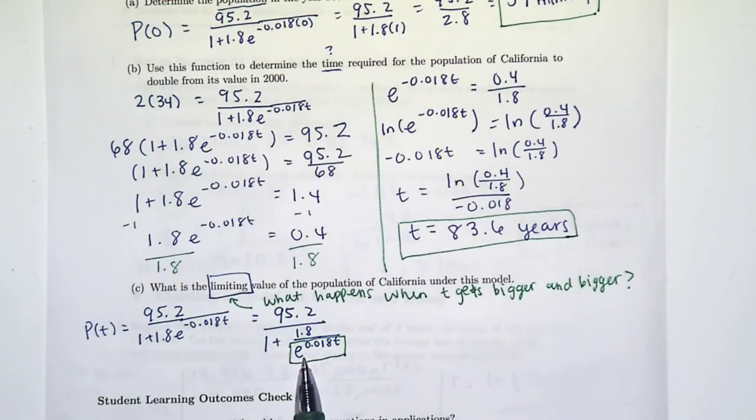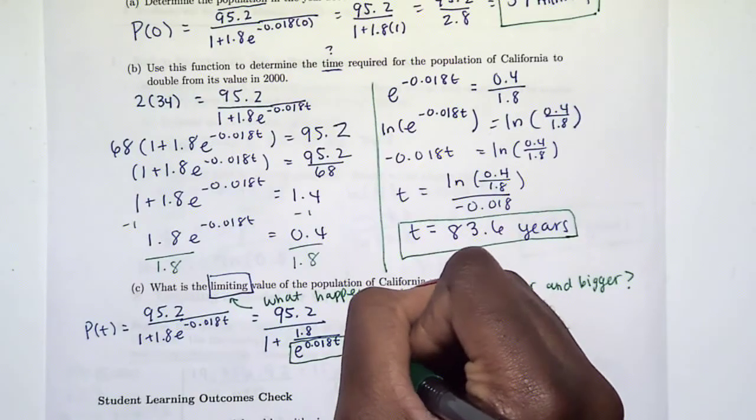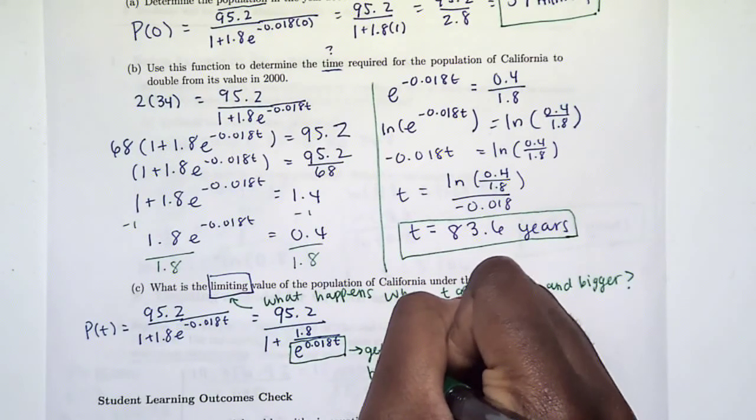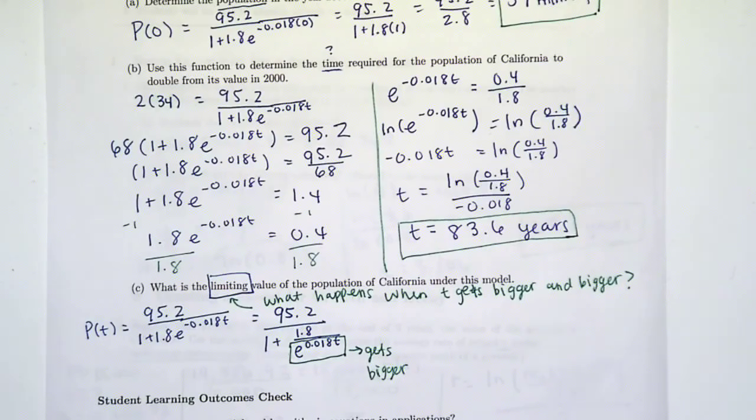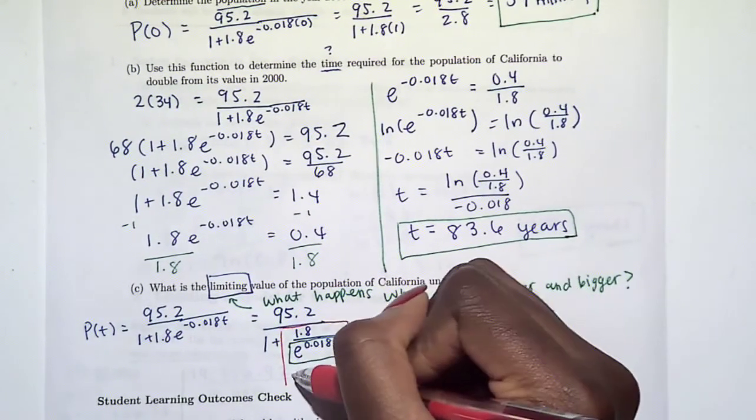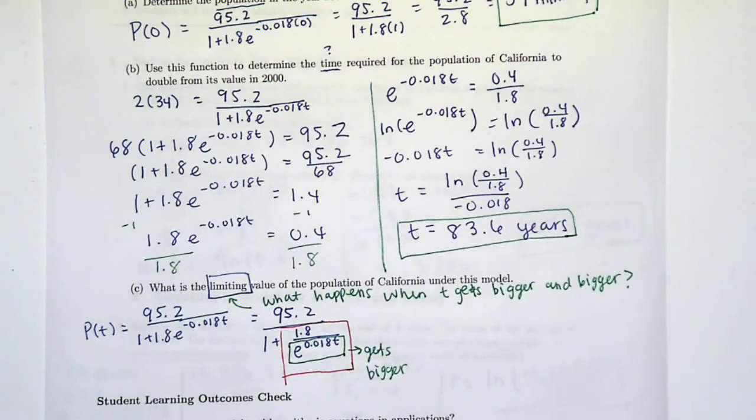So this thing gets bigger when time gets bigger. But note that it's in the denominator of a fraction. Do we remember what happens to a fraction when a denominator gets bigger? The whole fraction gets smaller.